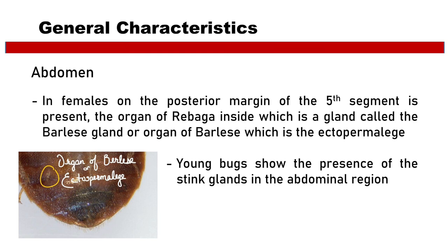In females, on the posterior margin of the fifth segment is present the organ of Ribaga, inside which is a gland called the Berlese gland, or organ of Berlese, which is the ectospermalege. Young bugs show the presence of stink glands in the abdominal region.